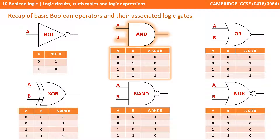Next we have the AND gate. For an AND gate output to be true, both the inputs have to be true; otherwise the output is false.